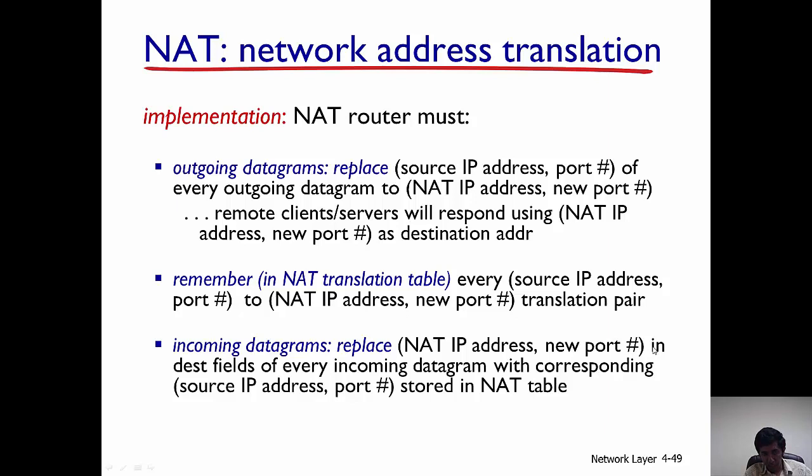For incoming datagrams addressed to hosts within the local network, they arrive addressed to the NAT IP address and a specific new port. The NAT then consults the NAT translation table, figures out the original source IP address and port for that datagram, and forwards it to the appropriate host within the local network.